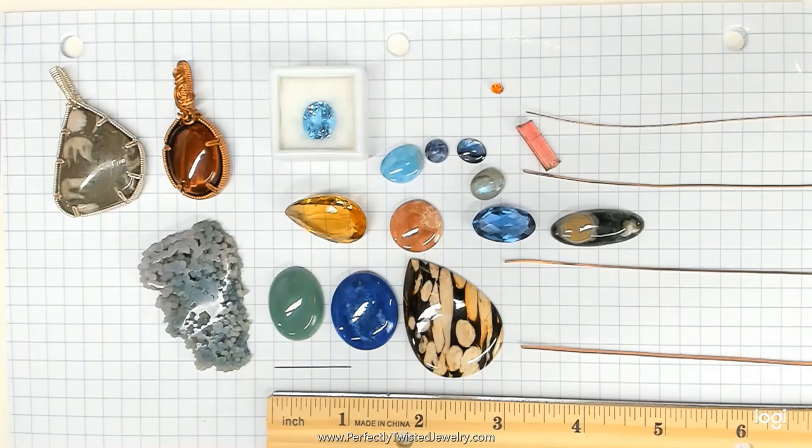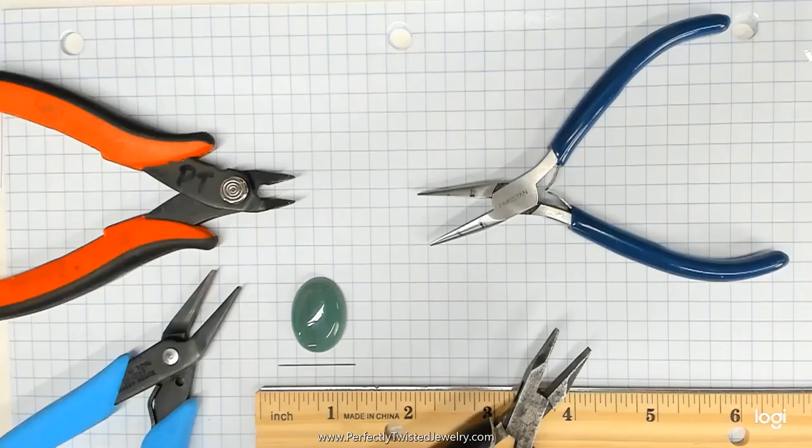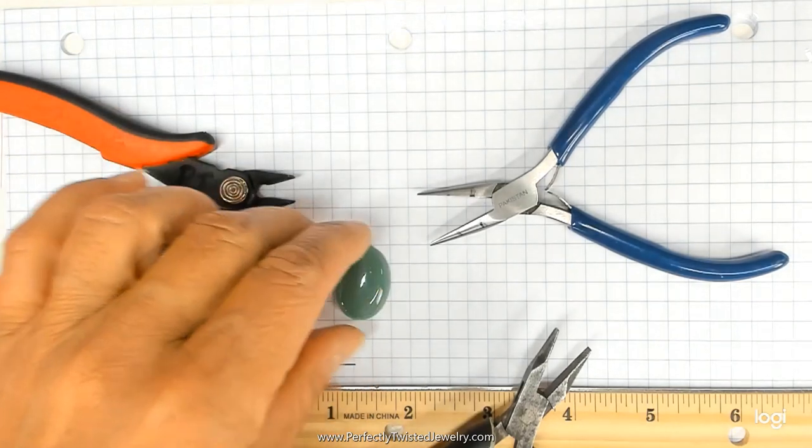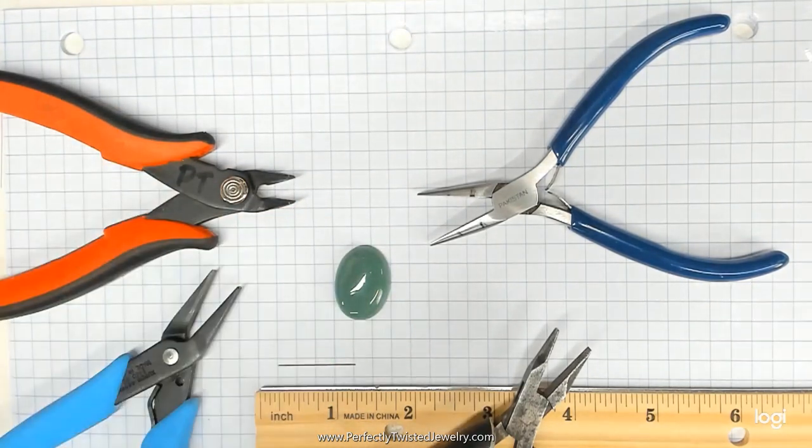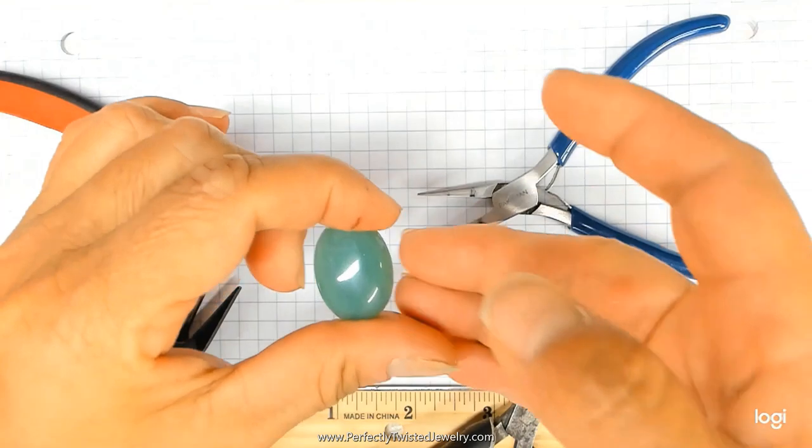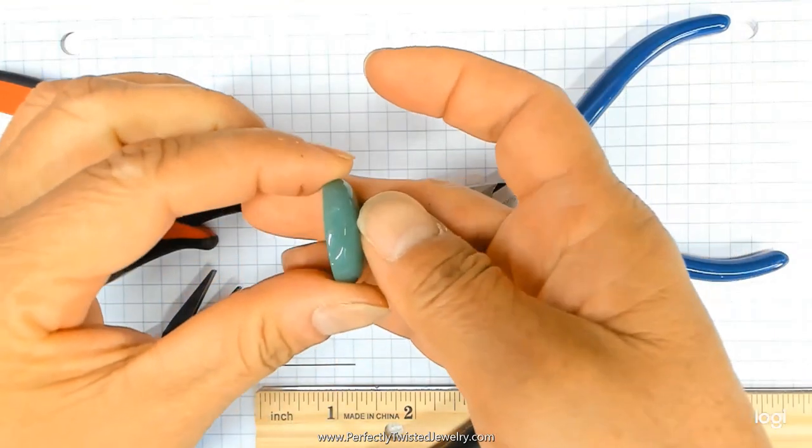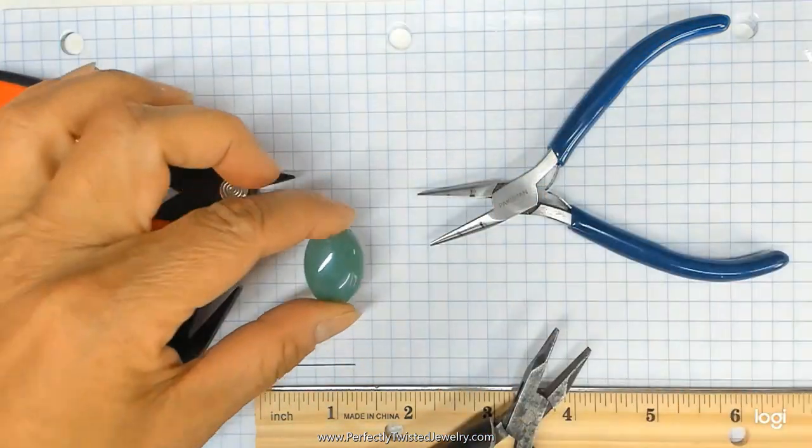I'm going to bust through one of the most common ways that we can measure for and plan for our wire wrap prongs. So I'm going to start with a basic oval cabochon. It's about 1 inch by 3 quarter inch wide and about 5 millimeter in thickness.